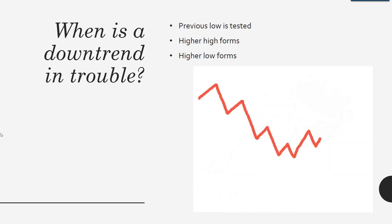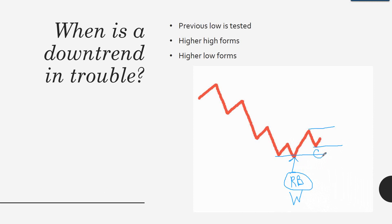When is a downtrend in trouble? The downtrend is in trouble when the low is tested and there is a rejection. The rejection will be a reversal bar, and once that reversal bar forms, you will make a new high followed by a higher low. This tells you there's weakness in the trend. This is the confirmation that the trend is now weak and it's probably reversing.